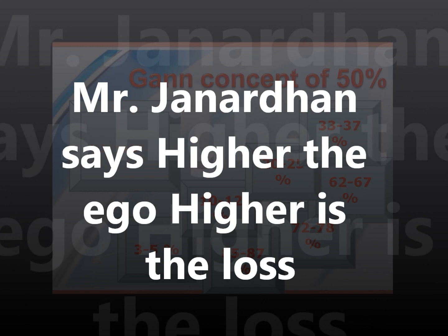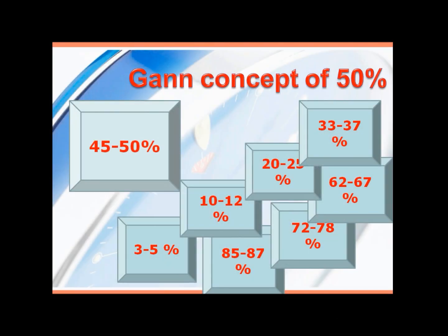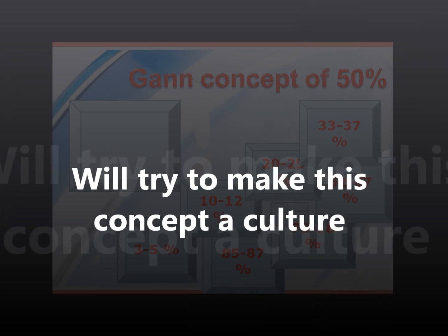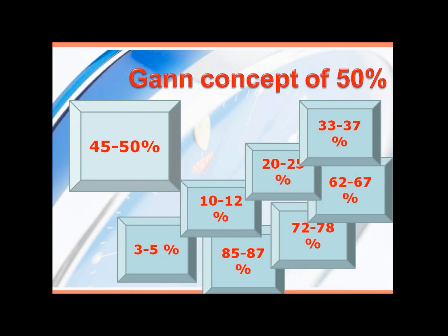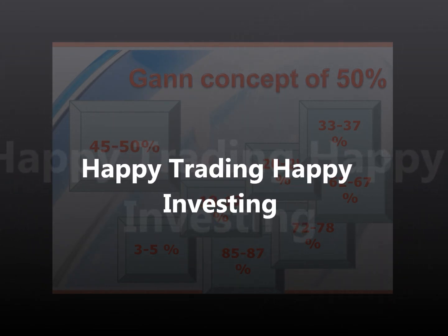What he has said is: buy and sell on a fifty percent decline from any high level, or a fifty percent advance from any low level, so long as these reactions or rallies are with the main trend — these are real resistance as well as buying and selling points. We are working on this and will keep working on it, trying to make this a culture and a program for all traders to take advantage of playing on the fifty percent advance or decline. Good luck, goodbye, happy trading, and happy investing to all my students.